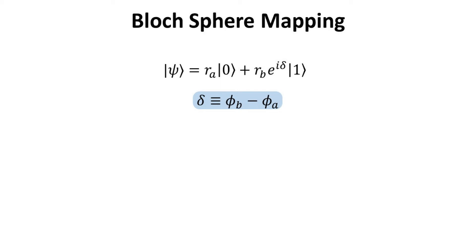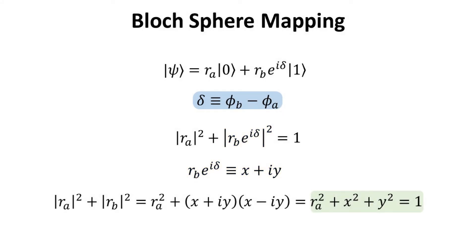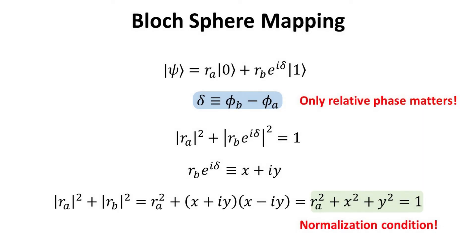With that in mind, we can simply let R_A be a real number without loss of generality, and define a relative phase on amplitude B as delta, which is simply the difference between phi_A and phi_B. Now the qubit should still be normalized, so the sum of the squared moduli of the coefficients is 1. We rewrite the part with the relative phase in rectangular form as x plus i·y. Substituting this back into the normalization condition yields the following equation. Thus, here are our two constraints mentioned at the beginning of the video: only the relative phase of the amplitudes matters, and the amplitudes must be normalized.